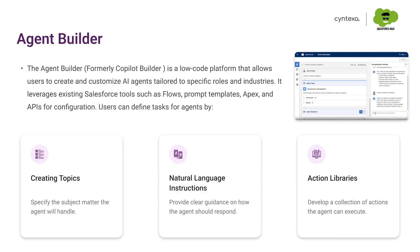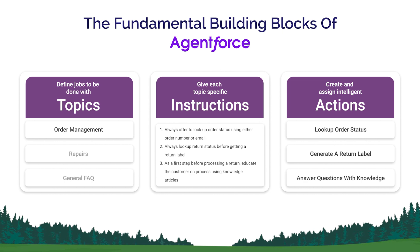Then we have the fundamental building blocks of Agent Force. We can define topics like order management, repairs, and general FAQ, where we define what the topic is and what things it needs to take care of in the scope section — what it needs to do and what it does not need to do. So we can define guardrails as well. That comes into the instruction set — for example, always offer lookup order status using either order number or email, look up return status before getting a return label. Then we have certain actions like lookup order status and generate a return label.